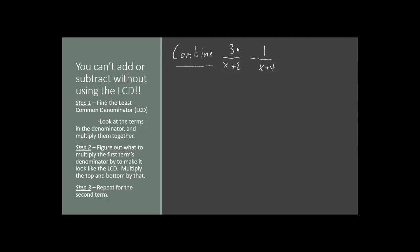In this problem, I've given you 3 divided by (x plus 2) minus 1 over (x plus 4). You might be tempted to just subtract them right now, but the cardinal rule of fractions is that you cannot add or subtract them unless you have an LCD. You could multiply or divide them, but you can't add or subtract them. Since we have a subtraction sign in the middle, we have to find the least common denominator before we continue.